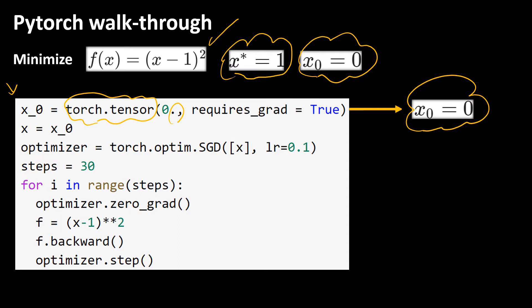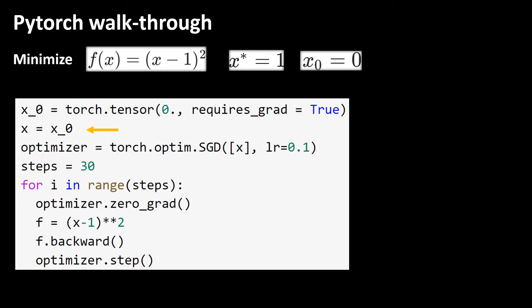The more important one is the requires_grad variable that is set to be true. This tells PyTorch that every function including x_0 is a differentiable function and has a derivative. We are not going to use x_0 so we assign x_0 to x.